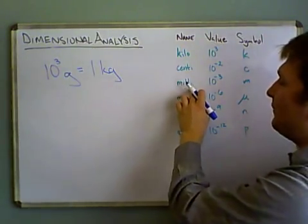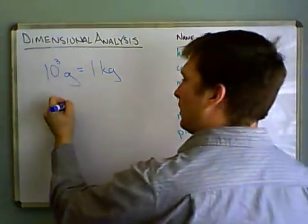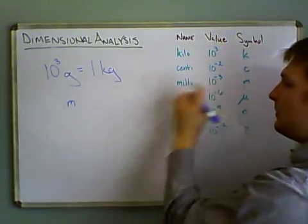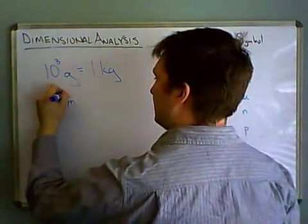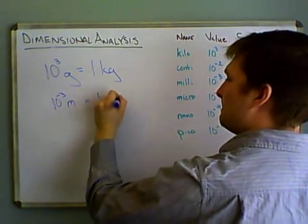Likewise, if you have millimeters, let's say we're working with meters, so our base unit, meters, would be the one that's modified here. 10 to the negative third meters in one millimeter.